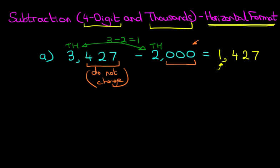The 427, hundreds, tens and units will not change. Now just to work through a second example, 8593, let's put a comma, minus 6000 is just as simple.